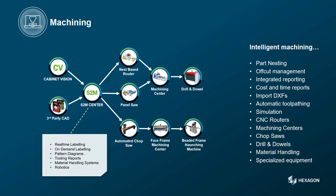All this data is communicated to the shop not only digitally and directly to the machines, but also through real-time and on-demand labels, pattern diagrams, and tooling reports. Our market-leading machining solutions for woodworkers remain on the cutting edge of automation, as we continually develop solutions to drive more and more types of machinery, including robotic material handling and part unloading systems. We empower you to achieve smarter factories by providing digital, autonomous solutions that increase productivity and quality.